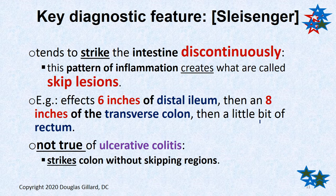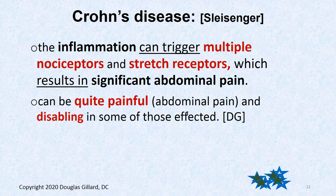Key diagnostic features include skip lesions — Crohn's disease tends to strike discontinuously, hitting the proximal colon and then maybe six inches of the distal ileum and some of the transverse colon. That's not true of ulcerative colitis, which doesn't skip regions.